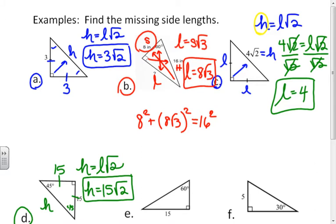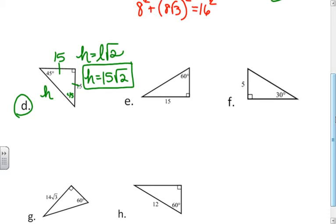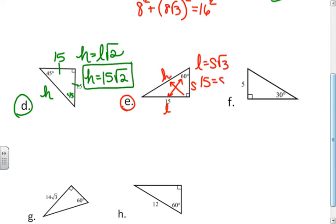This is also a problem where you could use the Pythagorean theorem since you know two of the three sides, so we're developing multiple tools for solving these problems. In example E, you can't use the Pythagorean theorem because you only know one side — in this case, the long side. So I don't know the short side or the hypotenuse. Since the long side equals the short side times the square root of three, I put in what I know: fifteen equals s times the square root of three. Divide by the square root of three.